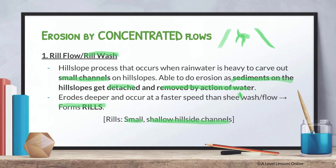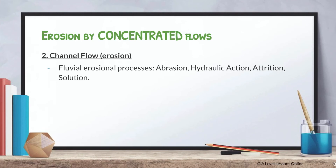The next concentrated flow is channel flow, which looks specifically at an entire river channel. Within channel flow, the erosional processes are abrasion, hydraulic action, attrition, and solution. I've already gone through these in fluvial processes — I'll leave a link in the top right corner and in the description. These are the erosional processes that occur within a river channel specifically.